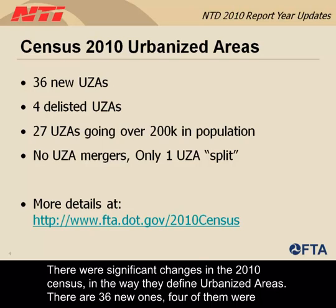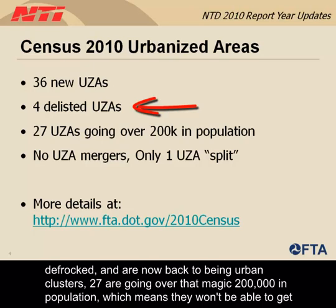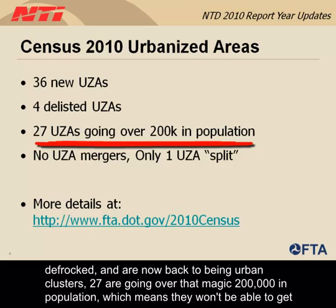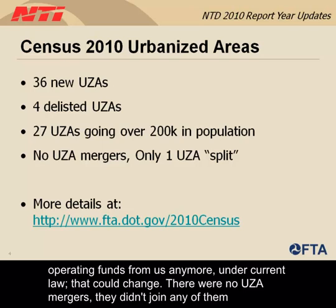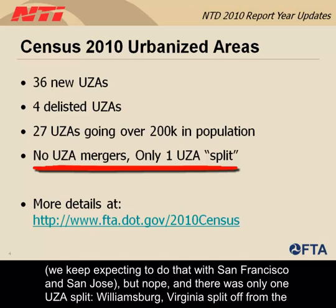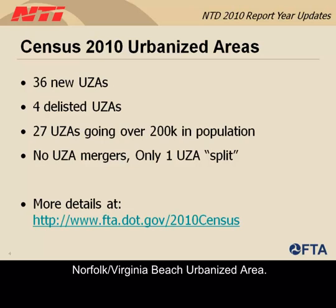There were significant changes in the 2010 census in the way they define urbanized areas. There are 36 new ones. Four of them were defrocked and are now back to being urban clusters. Twenty-seven are going over that magic 200,000 in population, which means they won't be able to get operating funds from us anymore under current law. There were no UZA mergers. We keep expecting them to merge San Francisco and San Jose, but no. And there was only one UZA split: Williamsburg, Virginia split off from the Norfolk/Virginia Beach urbanized area.